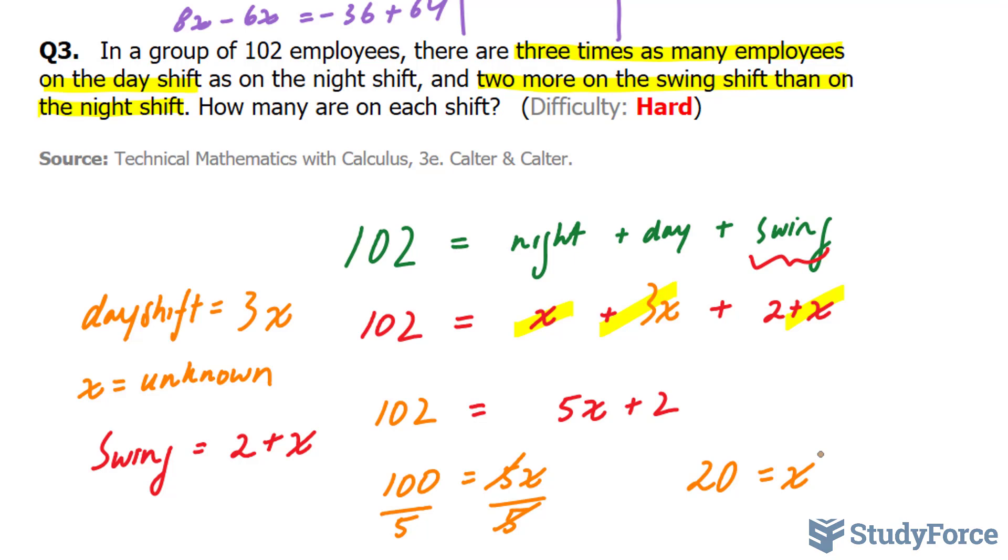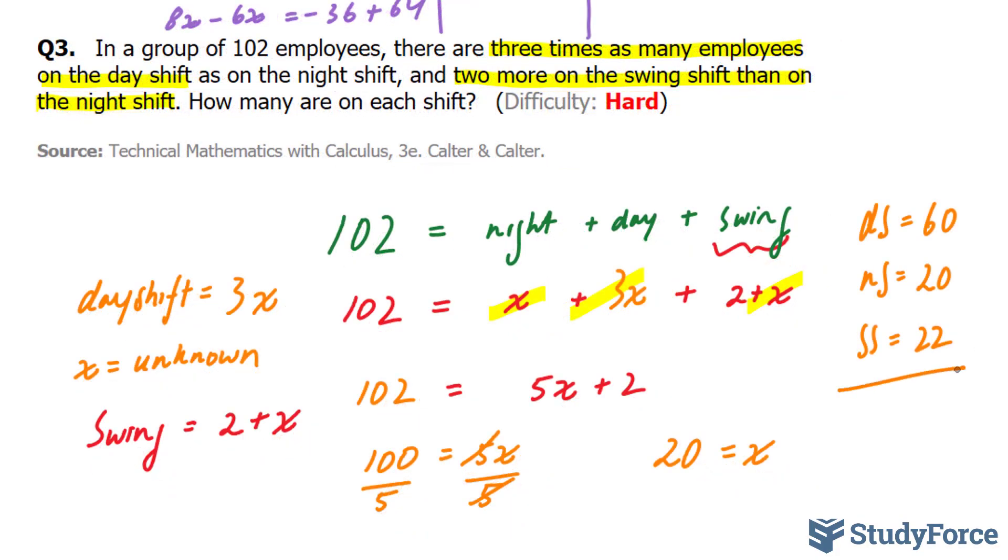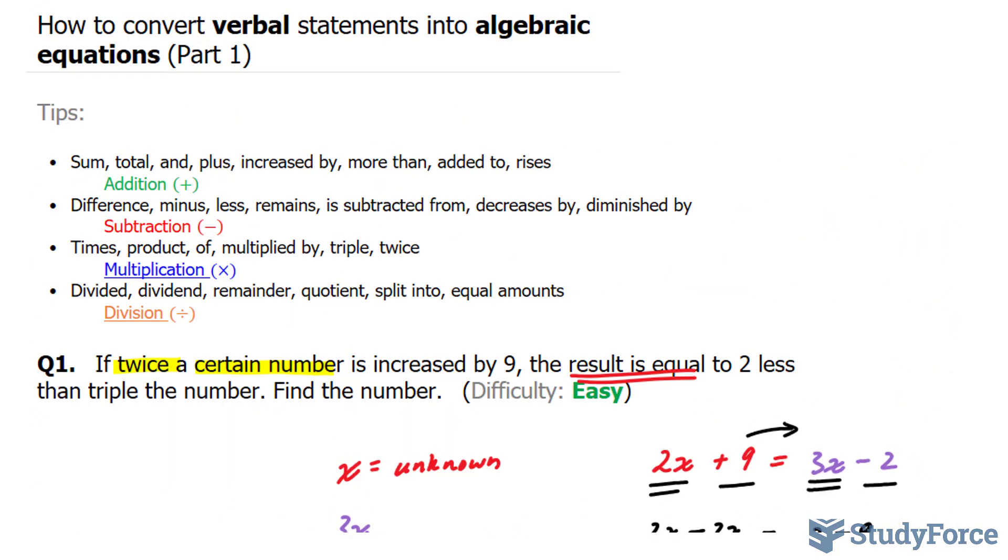Dividing both sides by 5 gives us 20 is equal to x. So to conclude, there are 20 employees on the night shift, 22 in the swing shift, putting the 20 here gives us 22 in the swing shift, and 3 times 20 is 60 in the day shift. And there you have it. Three examples on how to convert verbal statements into algebraic equations. Make sure to watch part 2 where we tackle a different type of example related to this.